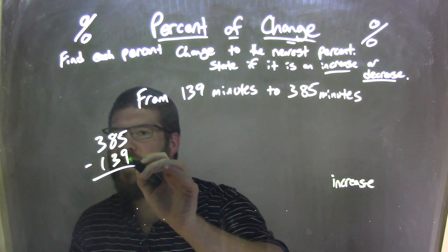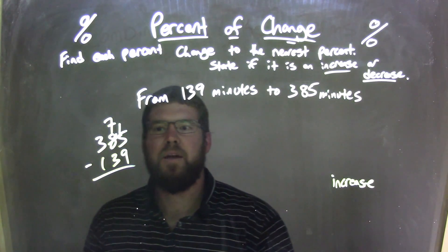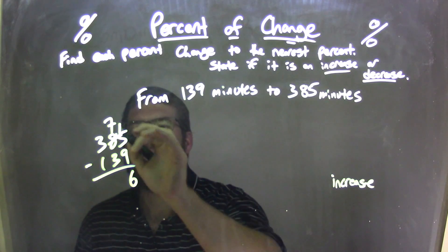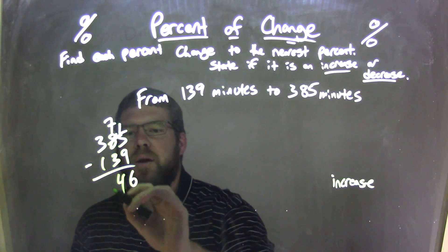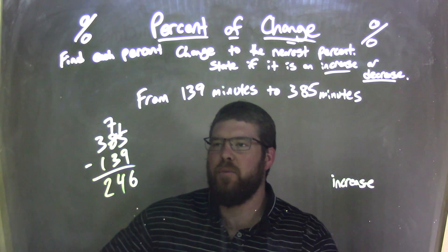Well, I can't take 9 from 5, so let's make that 8 of 7. 15 minus 9, that's going to be 6, right? 7 minus 3 is 4, and 3 minus 1 is 2. And we have 246 here as my answer.